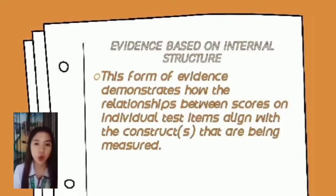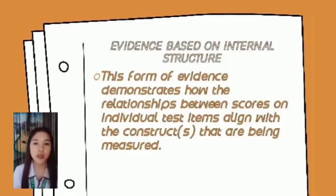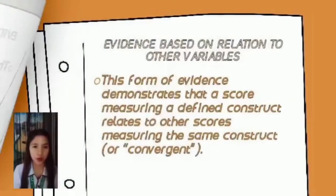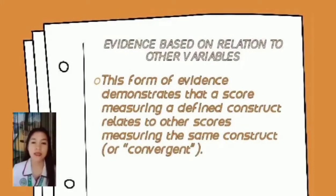The third type of validity evidence is evidence based on internal structure. It demonstrates how the relationship between scores on individual test items aligns with the constructs being addressed in the test. Instructors can gather evidence based on internal structure by conducting item-level analysis or by calculating an exploratory or confirmatory factor analysis to determine how well singular items relate to each other.